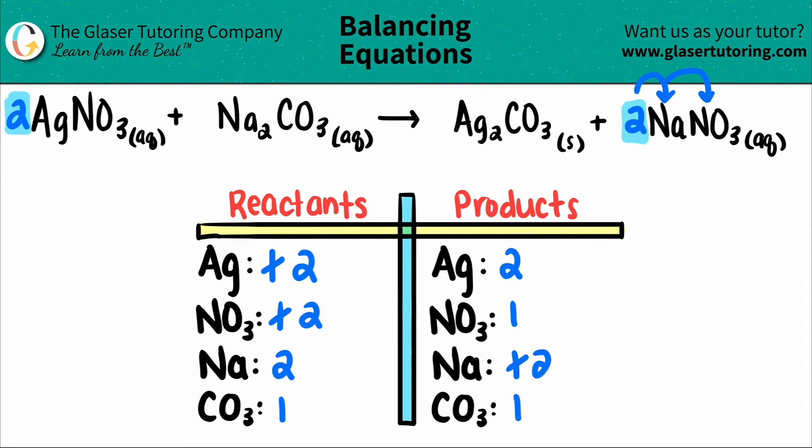This gets distributed to the element sodium and the polyatomic nitrate. So I have two sodiums, but now I have two total nitrates. But if I look back now, all of my elements and my polyatomics are all balanced. So this one's done.